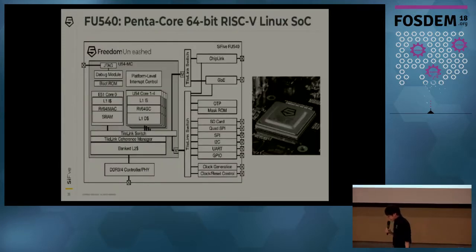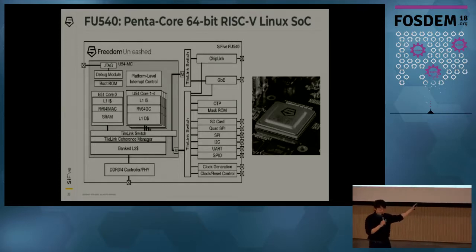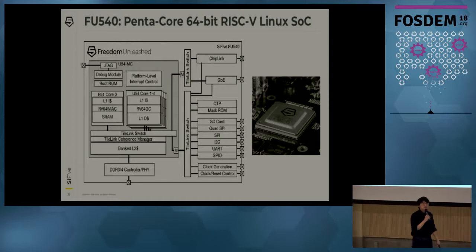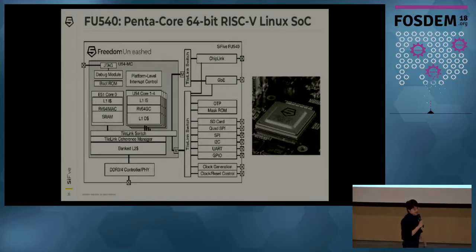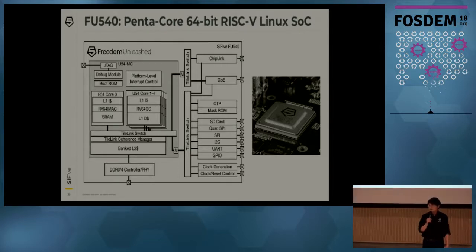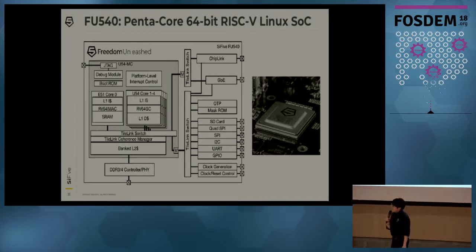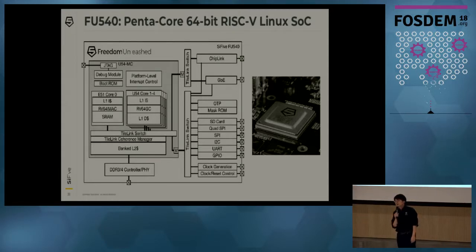Looking at the chip more closely, this is the block diagram: there's one E-core and four U-cores, with a coherent L2 cache in the middle and a bunch of low-speed peripherals on the right, plus gigabit Ethernet. There's OTP, mask ROM, and notice that all the components on the SoC are connected with TileLink — a free and open SoC interconnect standard we started building from our Berkeley days, with all the specs available online.